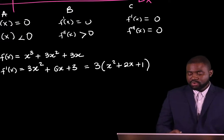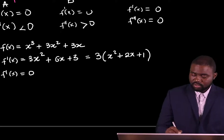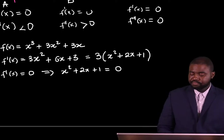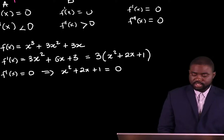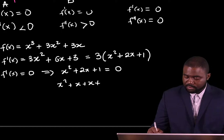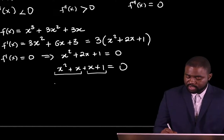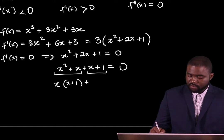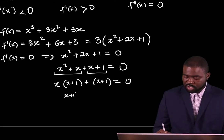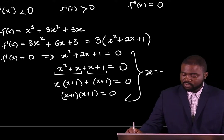We know that at turning points, f prime of x is equal to 0. This means that x squared plus 2x plus 1 equals 0. We have to solve this quadratic equation. Rewriting this as x squared plus x plus x plus 1 equals 0, we see that x is common, so we factorize: x(x+1) plus (x+1) equals 0, giving (x+1)(x+1) equals 0, so x equals negative 1.